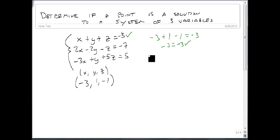We come back in and we go 2 times minus 3 minus 2 times 1 minus 1 times minus 1. Does that equal minus 7? Minus 6 minus 2 plus 1 is minus 8 plus 1 minus 7. Sure enough, it's minus 7. So this point also works for our second equation.